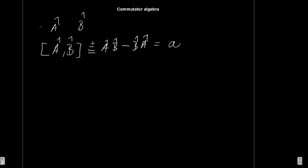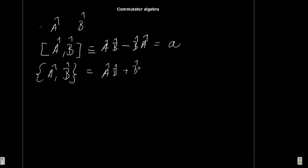The anti-commutator is defined similarly, although we are not going to be using it for now. It is the opposite procedure: instead of a minus sign it uses a plus, so it is AB plus BA. If this is zero, you say that the operators anti-commute, and you can also determine the anti-commutation relation.